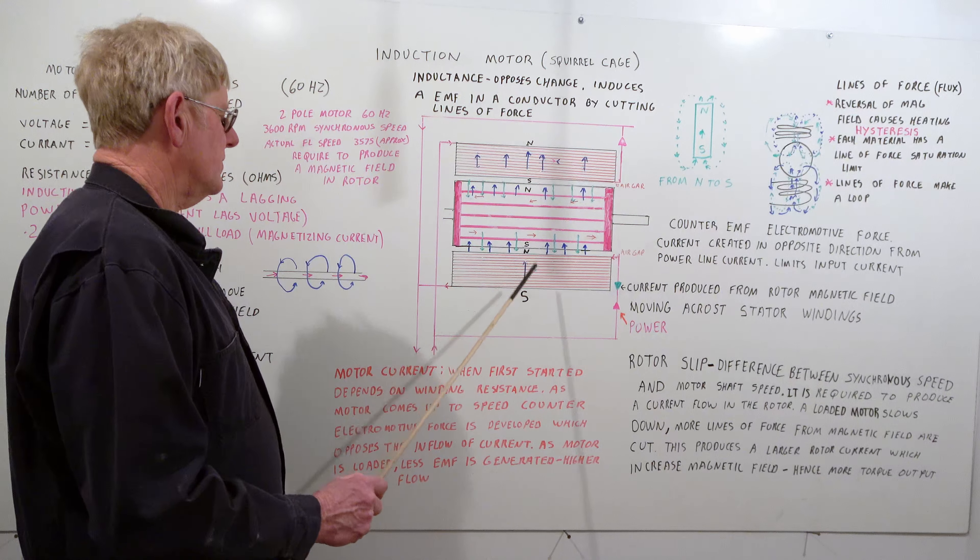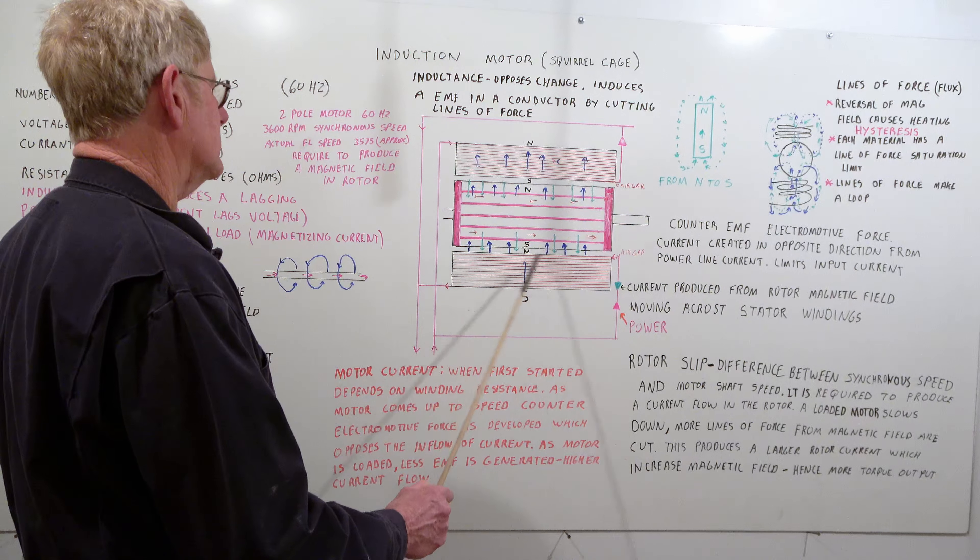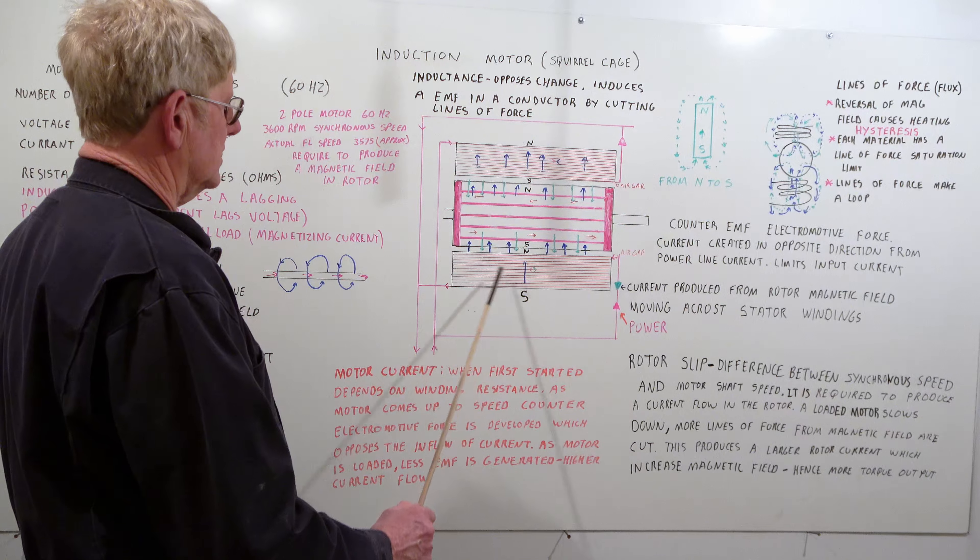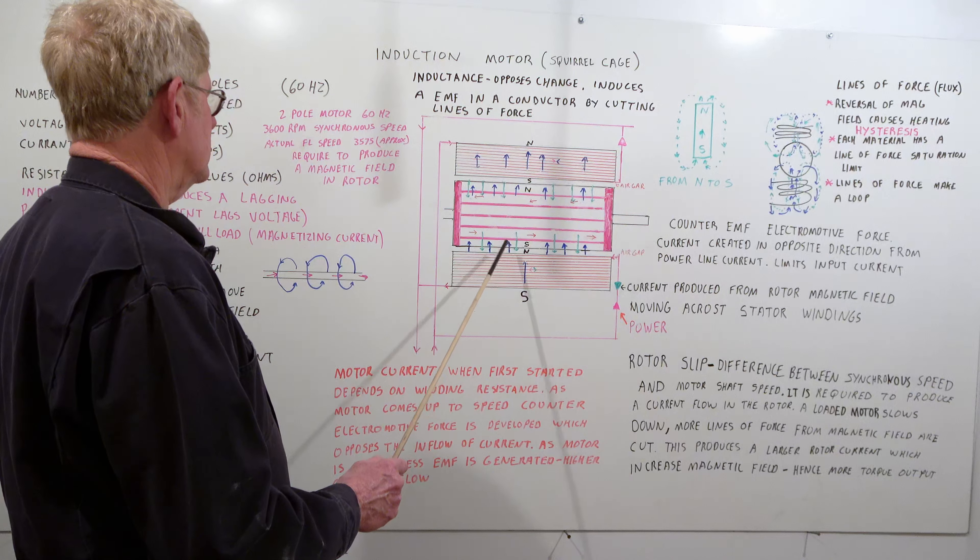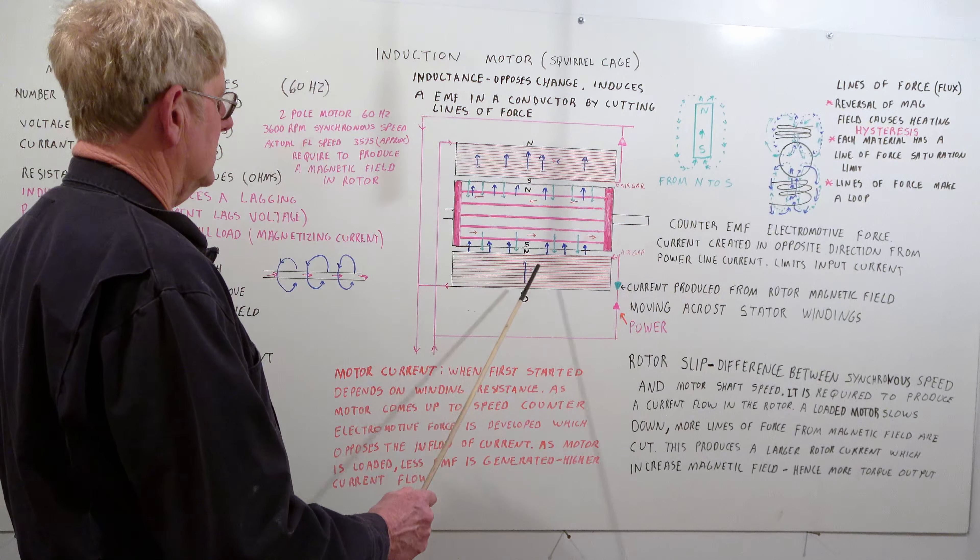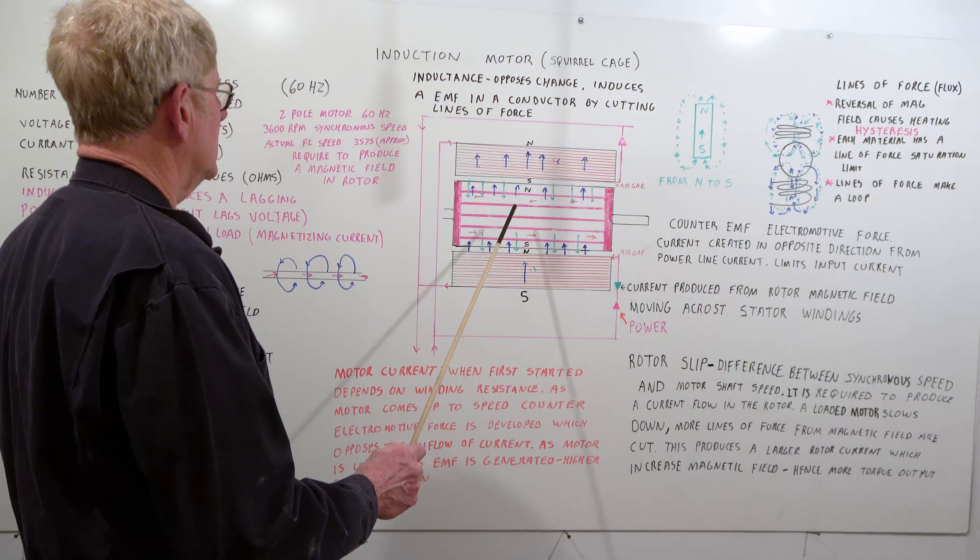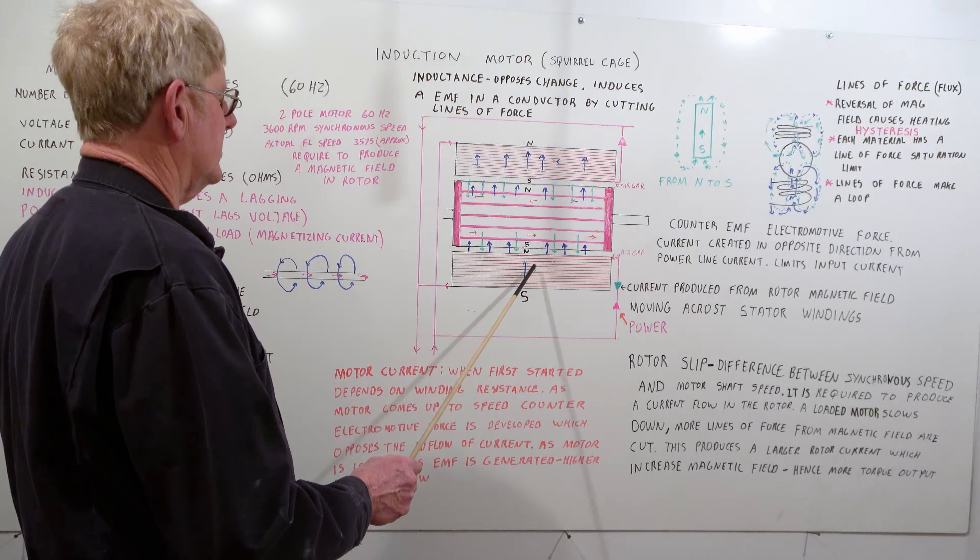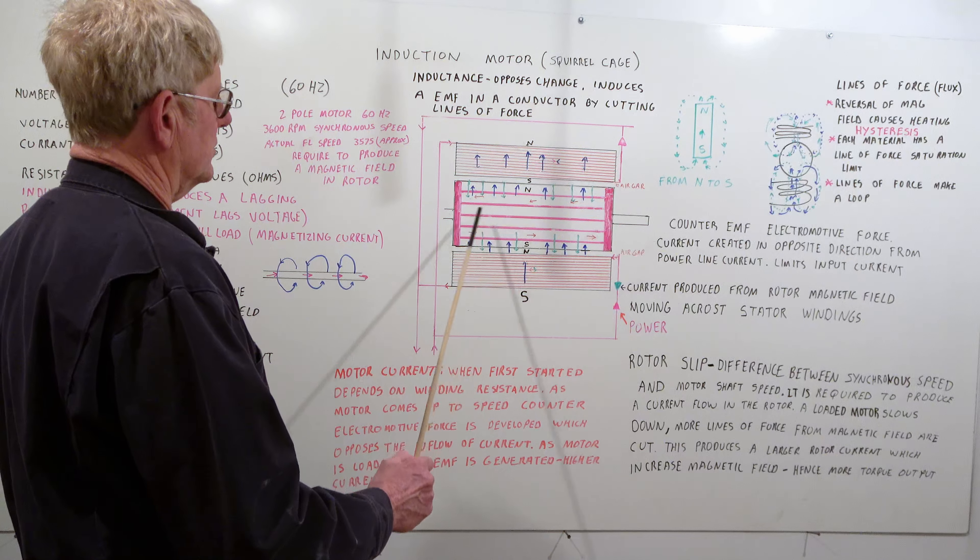So when you first start a motor, it's based on the winding resistance and a little bit of inductance. So you have very high starting currents. As this comes up to speed, you start developing counter EMF and it starts opposing the in-rush current flow. At full load speed, this will never run 3600 because it has to run a little bit slower to allow current to come in. You have to have your magnetizing current produced. So as you load up a motor, the rotor will slow down. EMF will drop and more current will flow through to produce a stronger magnetic field and they'll give you more torque in the motor.